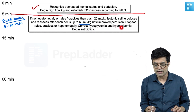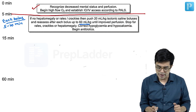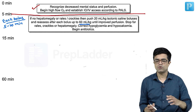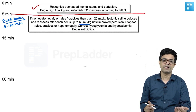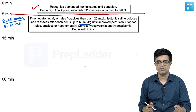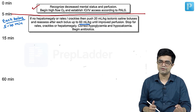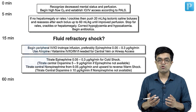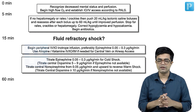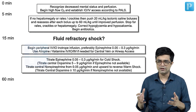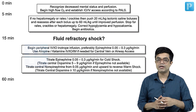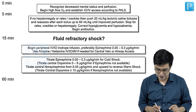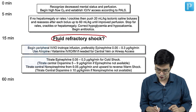Simultaneously, you will correct hypoglycemia and hypocalcemia if present, and begin IV broad-spectrum antibiotics within the first 15 minutes — through a separate IV access if needed. After this, assess whether the patient is improving. If improving, monitor, evaluate, and continue antibiotics. But if after 3 boluses the patient is still in shock, you will call it fluid refractory shock.